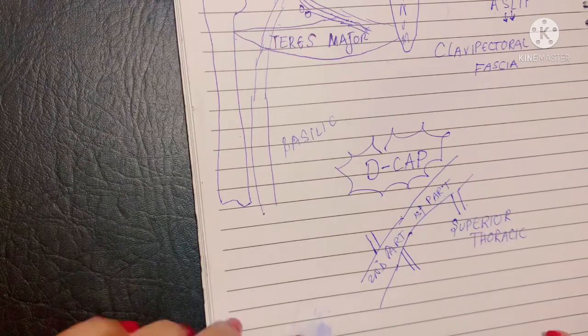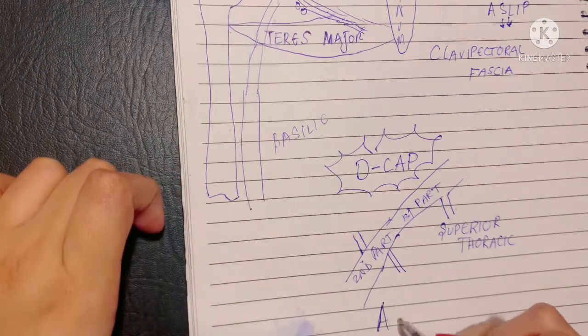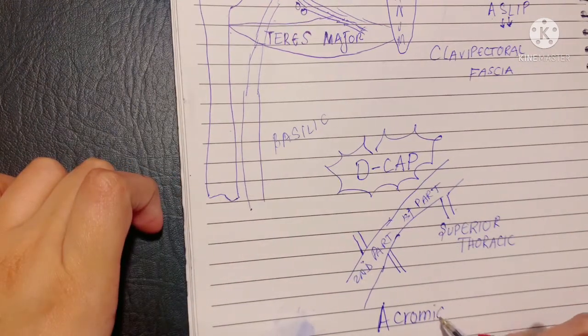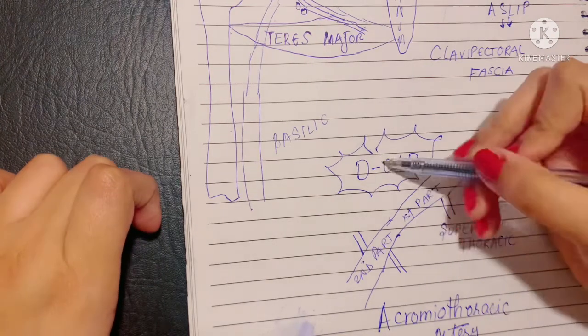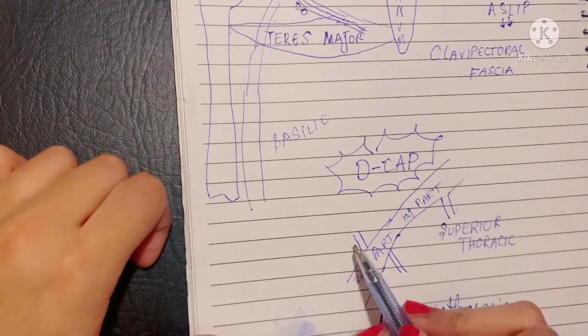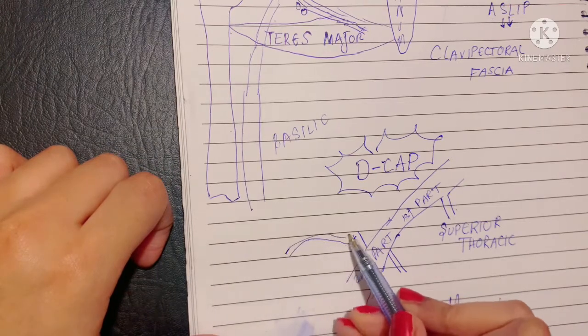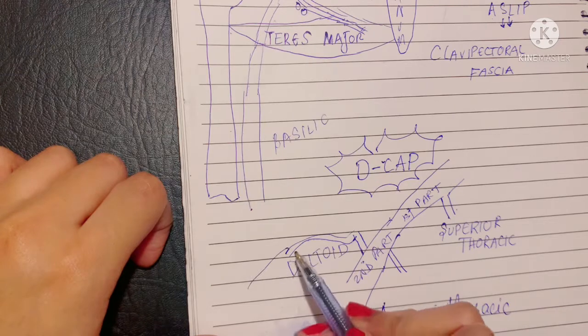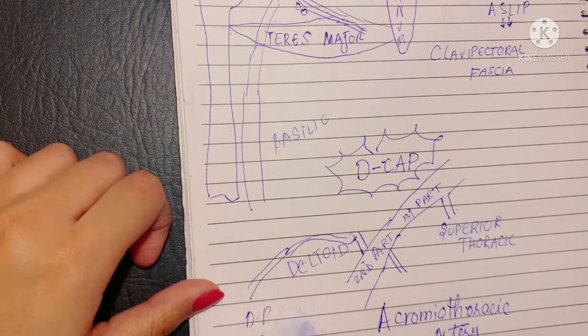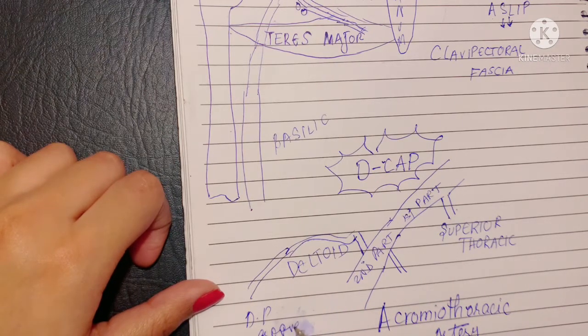D-CAP are the various branches of the acromiothoracic artery which is a branch of the second part of the axillary artery. Acromiothoracic has given the D-CAP branches, these are namely the deltoid branch, D for deltoid. The deltoid branch, as the name says, it goes into the deltopectoral groove and supplies the deltoid muscle.